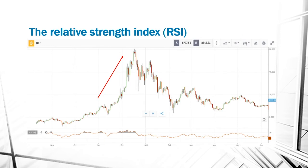Here we have Bitcoin. Bitcoin is a very good example of a product that was overbought and overvalued. From November to December 2017, the price of Bitcoin went from nearly $5,000 all the way to $19,000. We can see that there were several times that the RSI was above the 70 line, indicating that this asset was overpriced or overbought.